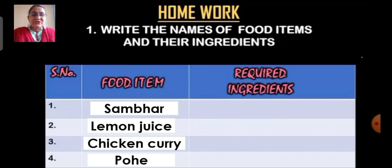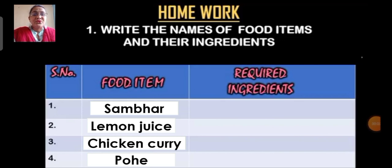Second is lemon juice: to make lemon juice you require water, lemons, sugar and salt. Next is chicken curry: the ingredients are chicken, spices, water and salt. Next is pohe: to make pohe you require pohe, onion, chilli, coriander, salt and oil.